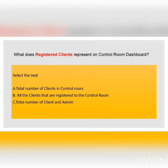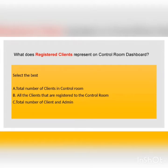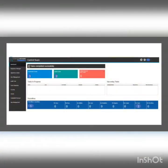What do registered clients represent on the control room dashboard? For example, if I have four developer licenses, I have four available clients. If I have three licenses, I have three available clients. As you can see here, I have only one registered client but my available clients are two — I can consume up to two.